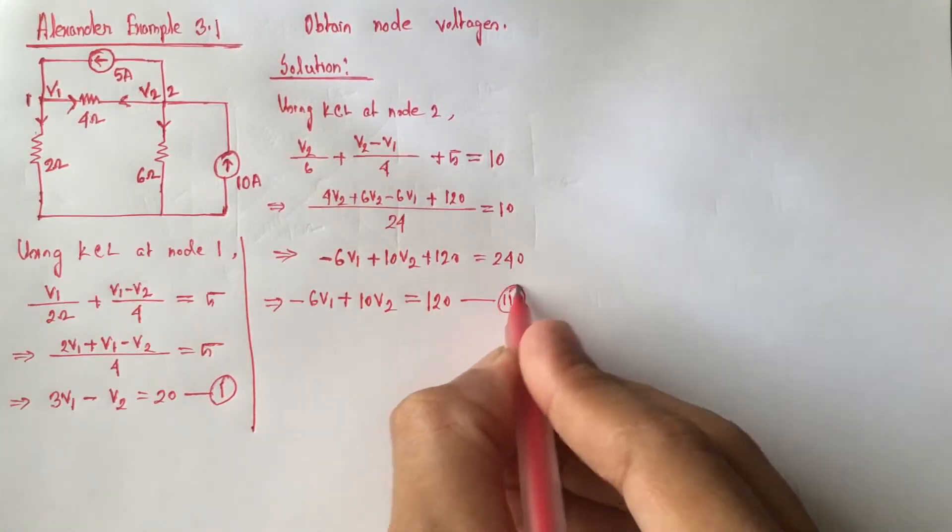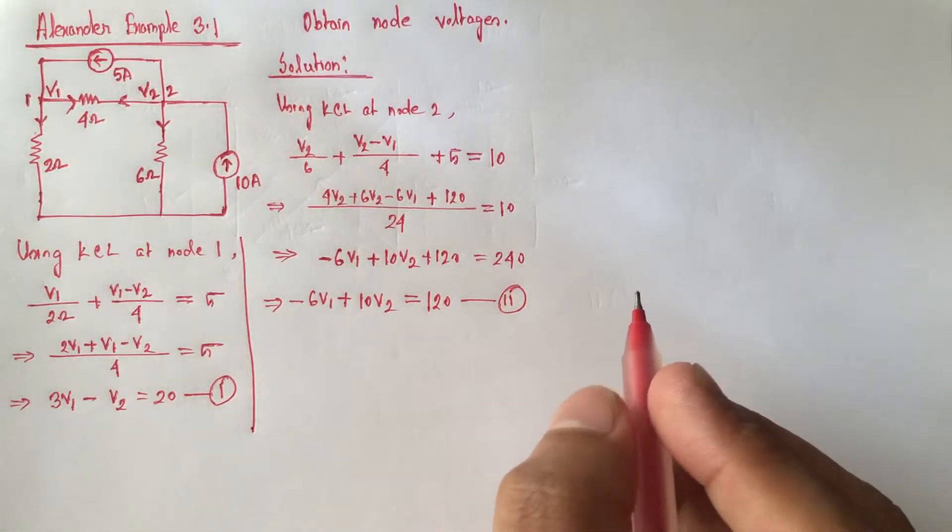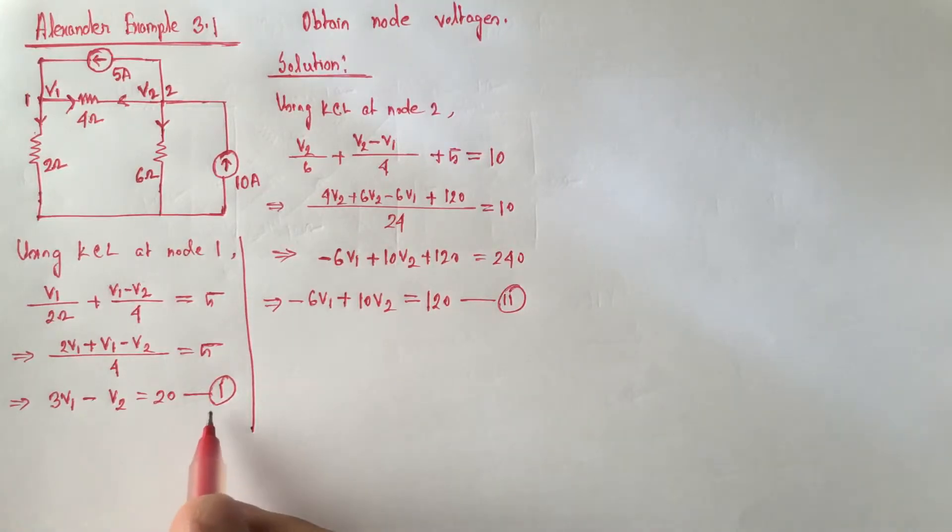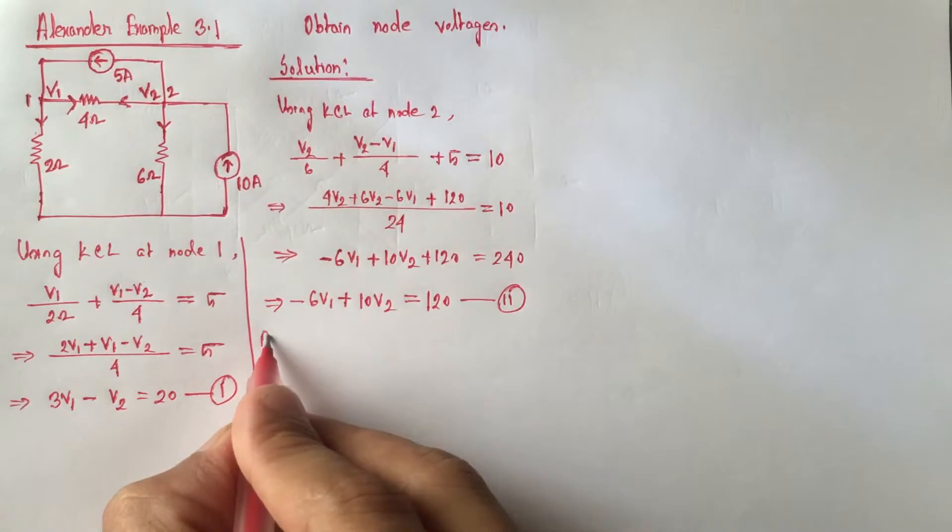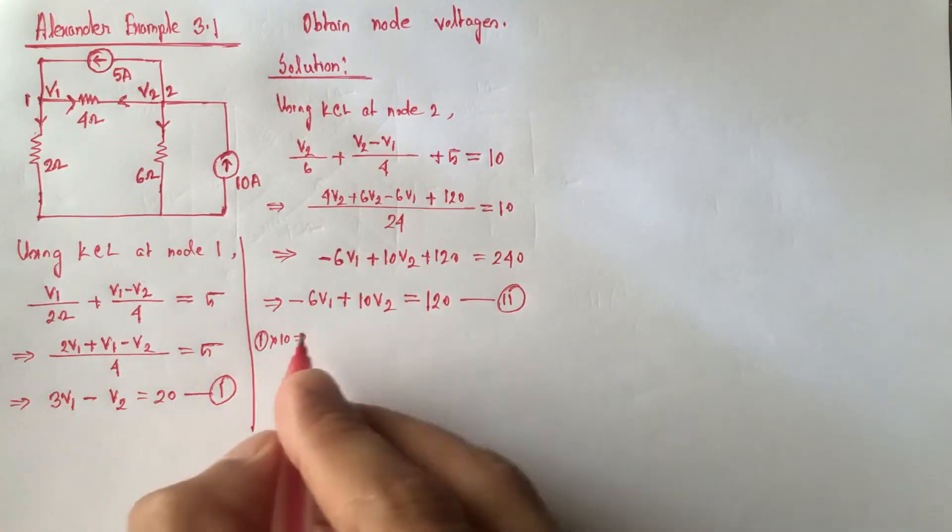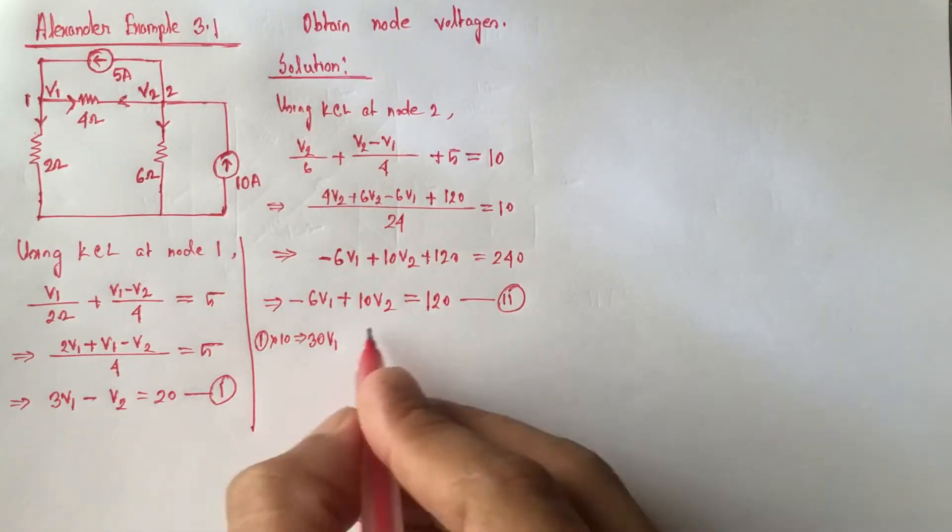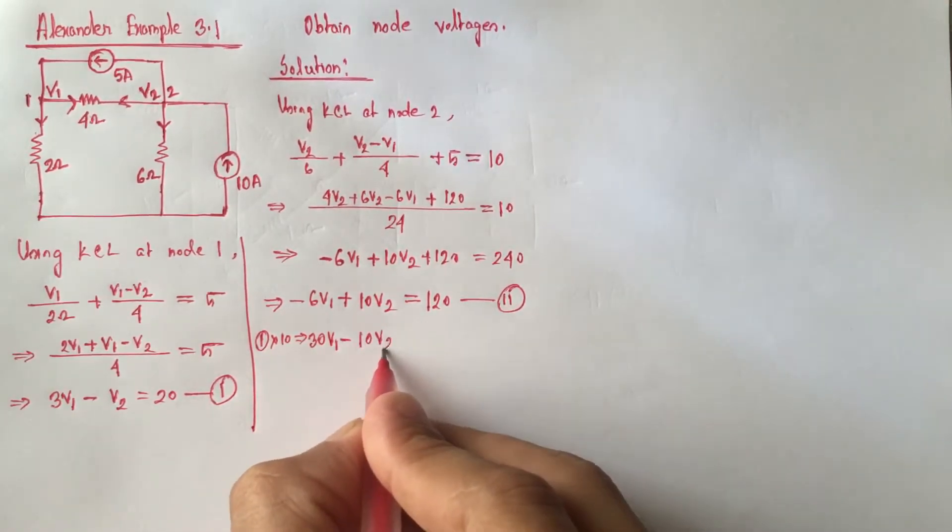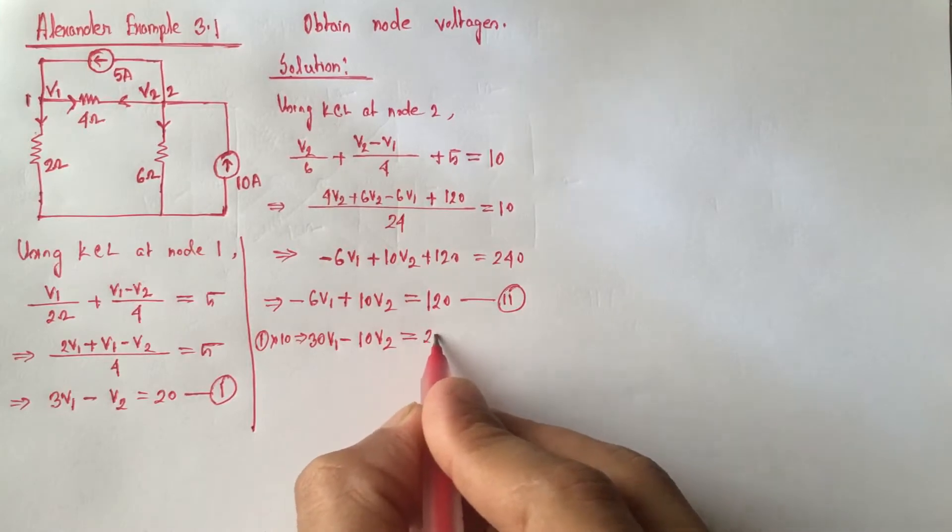Now if we multiply equation 1 by 10, multiplying equation 1 by 10 will yield 30 V1 minus 10 V2 is equal to 200.